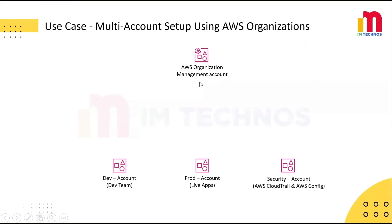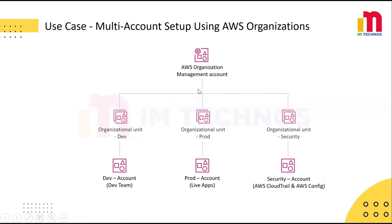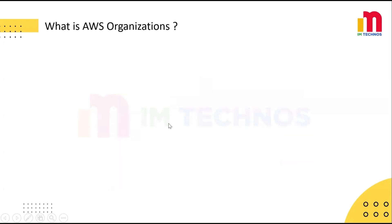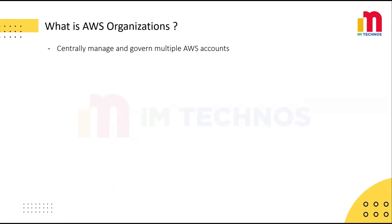It lets you group all AWS accounts under one umbrella and manage them centrally, saving time, improving security, and keeping everything under control. AWS Organizations is a service that helps you centrally manage and govern multiple AWS accounts. Instead of managing each account separately, you can put them all into one group and control everything from one place. Now let's go over the key components step-by-step.